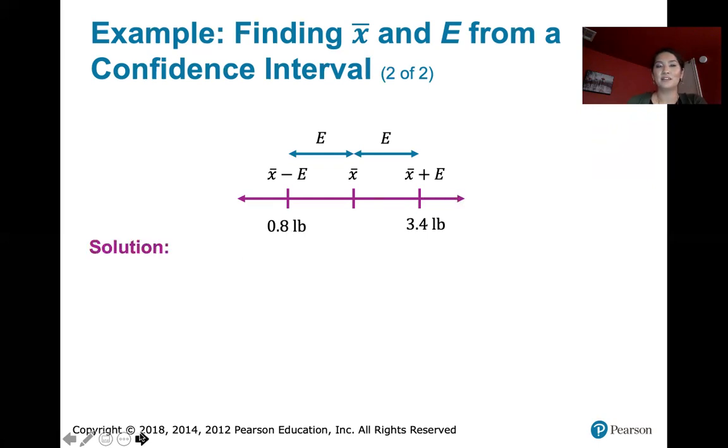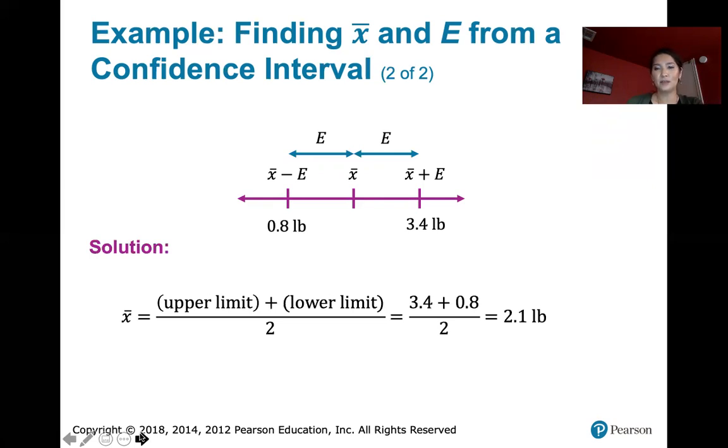So I add them together and I divide by 2. 3.4 plus 0.8 is 4.2. 4.2 divided by 2 is 2.1. So the mean weight loss in that group was only 2.1 pounds after a year. It's not much weight loss for a year.